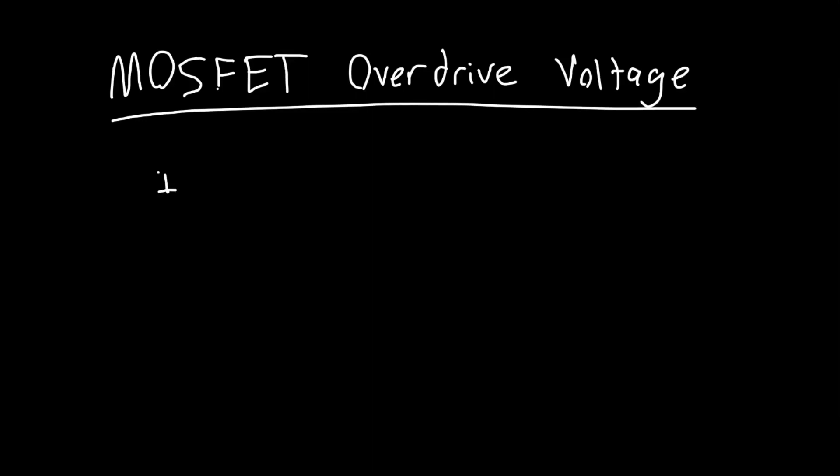So we know if we've got a garden variety NMOS, we know that if we've got a certain voltage VGS and we know the MOSFET's threshold VT...